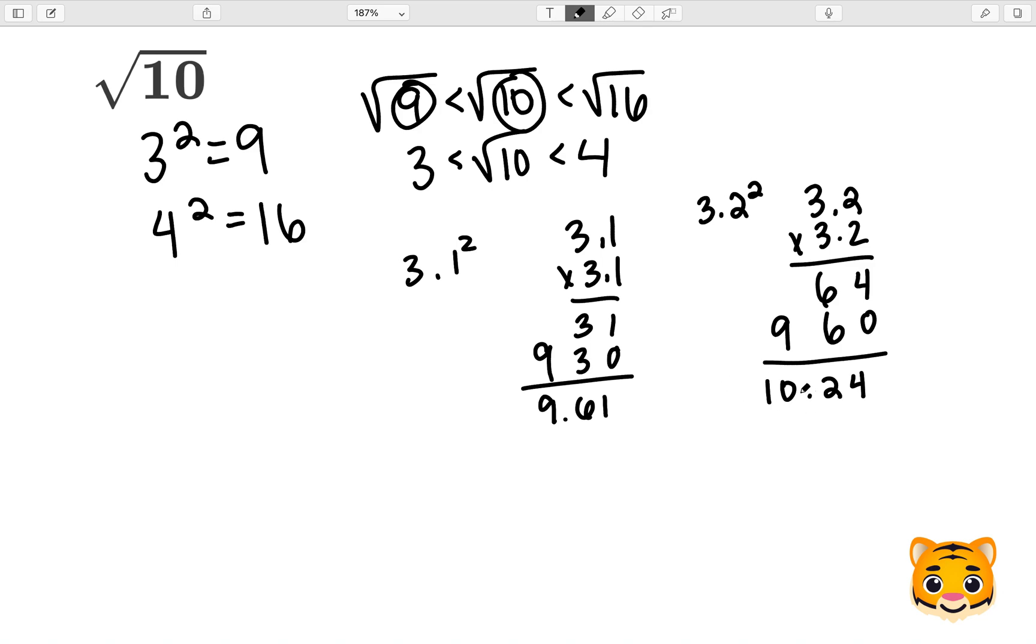And as you can see, 10.24 is much closer to 10 than 9.61. If that's confusing to you, let's just subtract 10 and 9.61. We will obtain 0.39 and if we did 10.24 minus 10, we would just get 0.24. So as you can see, 10.24 is closer to 10 than 9.61 is.